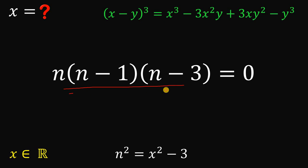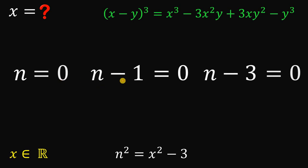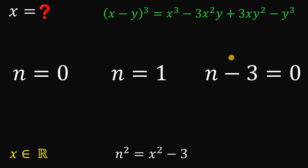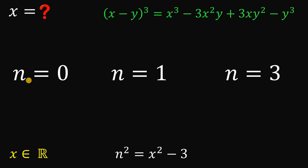So we have n times (n minus 1) times (n minus 3) equals 0. By the zero product property, at least one factor must equal 0. Therefore n equals 0, or n minus 1 equals 0 giving n equals 1, or n minus 3 equals 0 giving n equals 3. We now have three cases: n equals 0, n equals 1, and n equals 3.